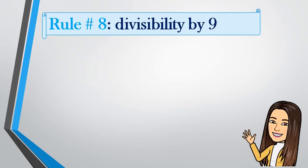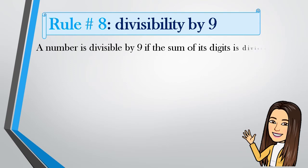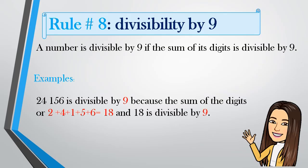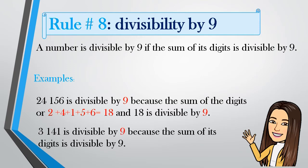Rule number 8: Divisibility by 9. A number is divisible by 9 if the sum of its digits is divisible by 9. Example: 24156 is divisible by 9 because the sum of its digits — 2 plus 4 plus 1 plus 5 plus 6 — equals 18, and 18 is divisible by 9. Another example: 3141 is divisible by 9 because the sum of its digits — 3 plus 1 plus 4 plus 1 — equals 9, and 9 divided by 9 is 1.